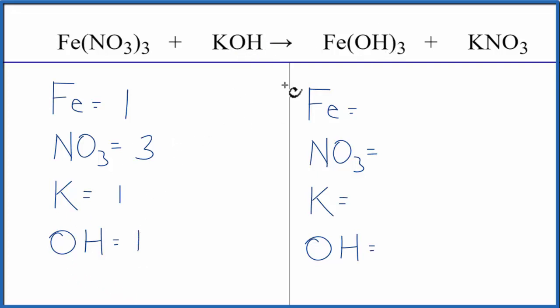On the product side of the equation, iron we have one, we have one nitrate here, one potassium, and then three of these hydroxides.